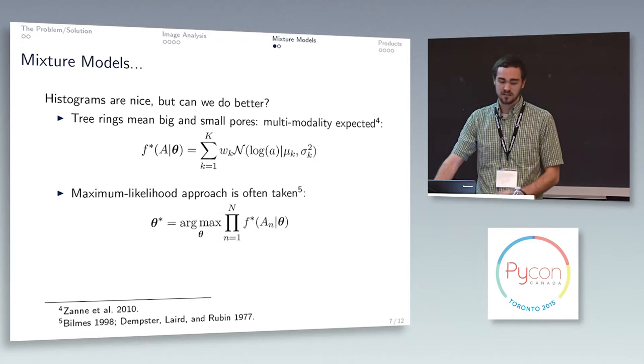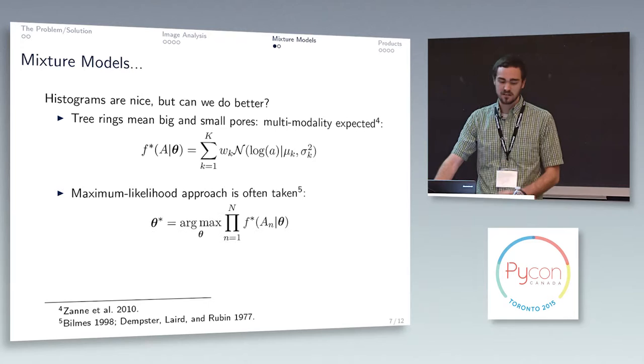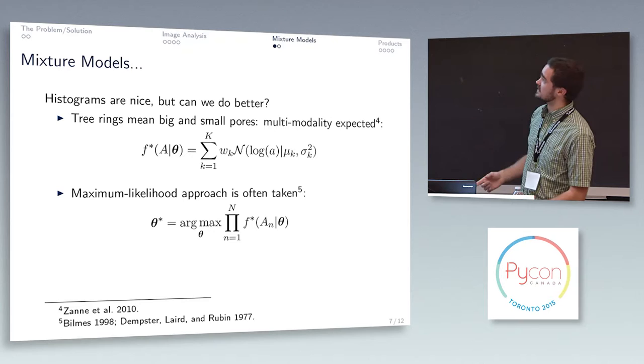So we can specify a model type, we can get our parameter set, an optimum parameter set, doing this maximization of a likelihood function.